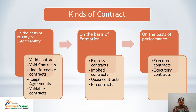Valid contracts are those contracts which are enforceable at law. For example, A offers to sell his car to B for rupees 30,000 and B agrees and pays. This is a valid contract because it includes all the essential elements of Section 10 of the Indian Contract Act 1872. Any contract which has all the essential elements of Section 10 is counted as a valid contract.